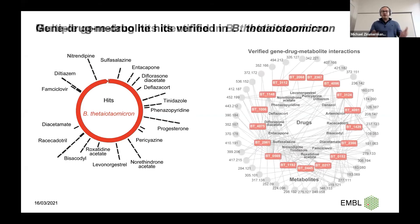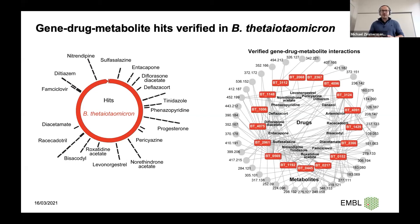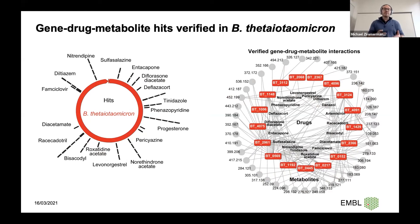We then biochemically verified each of those hits, resulting in a metabolic network shown on the right, where in the inner circle we have the 19 drugs metabolized, in red we have the gut microbiome-encoded enzymes that metabolize the drug, and in the most outer circle we have the drug metabolites that are produced.